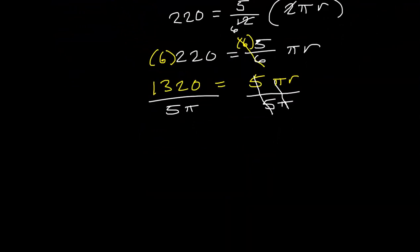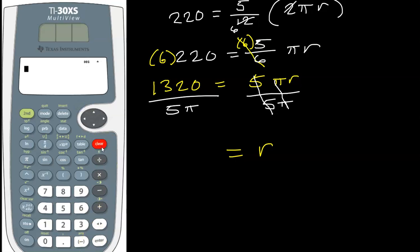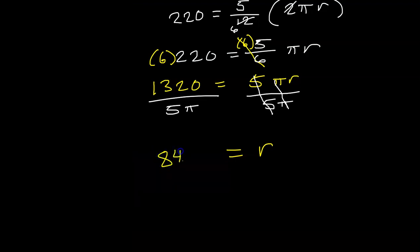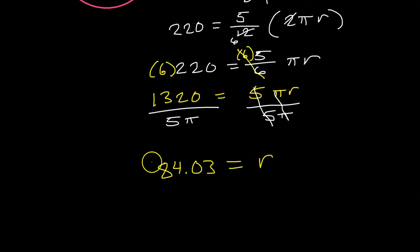So this is going to be the final answer. So I'm just going to put this entire thing into the calculator. Let's put it in fraction mode. So we will have 1,320 divided by 5π. So that's 84.03. And that's it. This would be the radius rounded to the nearest hundredth.